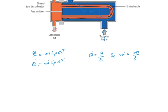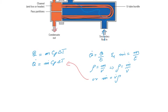You might also be familiar with the relation that density equals mass over volume, so you can also write this as density equals mass flow rate divided by volume flow rate, or mass flow rate equals volume flow rate multiplied by density. Replacing this, we get Q-dot equals volume flow rate multiplied by density multiplied by specific heat at constant pressure multiplied by the difference in temperature.